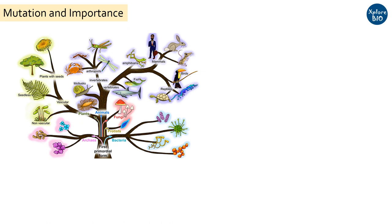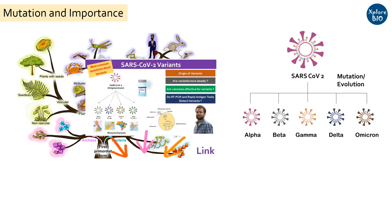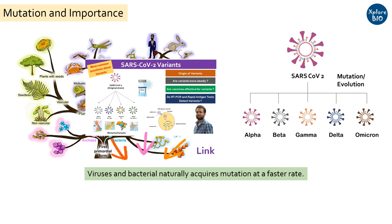It is mutation that has resulted in the evolution of different novel coronavirus variants, which differed in their ability to infect the host, multiply, and spread to human populations. As the multiplication rate of viruses and bacteria are quite faster compared to higher organisms like plants, they accumulate more mutations much more rapidly.